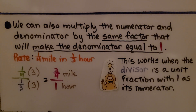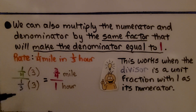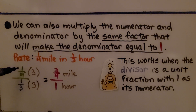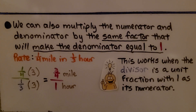Aside from dividing the fractions by multiplying by the reciprocal of the divisor, we can also multiply the numerator and denominator by the same factor that will make the denominator equal to 1. If we have 1/4 over 1/3 as our compound fraction, we're trying to get a unit rate, so we need the denominator to be 1. If we have 1/3, we need to multiply it by 3 to get 1. We multiply the numerator by the same thing, and 1/4 times 3 is 3/4. So our unit rate is 3/4 mile in 1 hour. This works when the divisor is a unit fraction with 1 as its numerator.